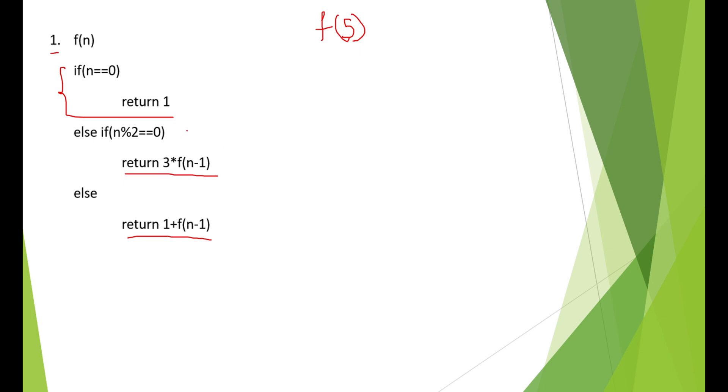Basically what this function does is, it checks whether the given parameter is even or odd. If it is even, then you have to return 3 into f of n minus 1. If it is odd, then return 1 plus f of n minus 1.